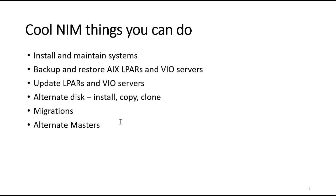There are a number of cool things you can use NIM for. Most people, when they think of NIM or Network Install Manager, think of its capacity to install and maintain systems and to do backups and restores. But you can actually use NIM to do updates, put bundles on, put on full service packs and fix packs, and use it to update VIO servers as well as regular LPARs. You can also do an alternate disk copy, install, or clone, which allows you to do migrations and updates to a copy of the operating system — and my favorite: migration upgrades, upgrading the OS across a version, such as from AIX version 6 to AIX version 7.